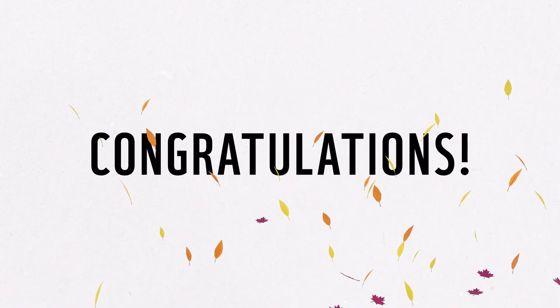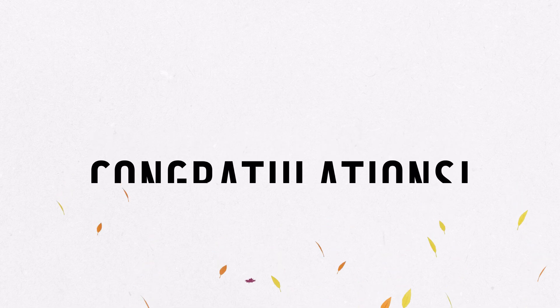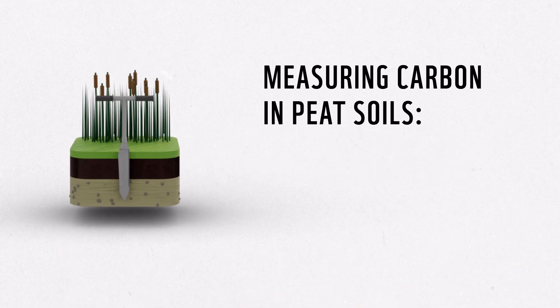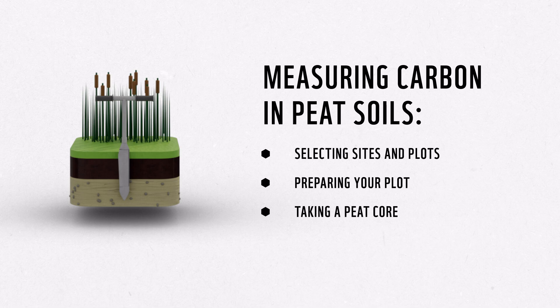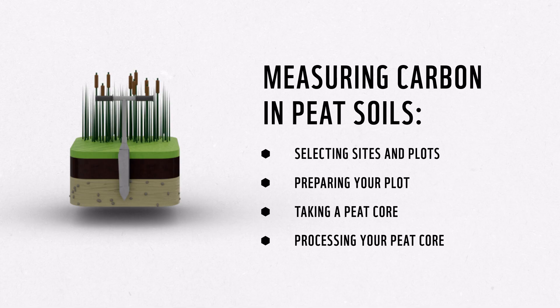Congratulations! You now know how to take a peat core to measure carbon in peat soils. In this video, you reviewed the steps for selecting a study area, site and plots, preparing your plot for coring, using a corer to take a peat core, and sectioning, processing, and packaging your peat core samples for lab analysis. For more information, please consult the guidelines for measuring carbon in peat soils, and refer back to this video anytime. Happy coring!